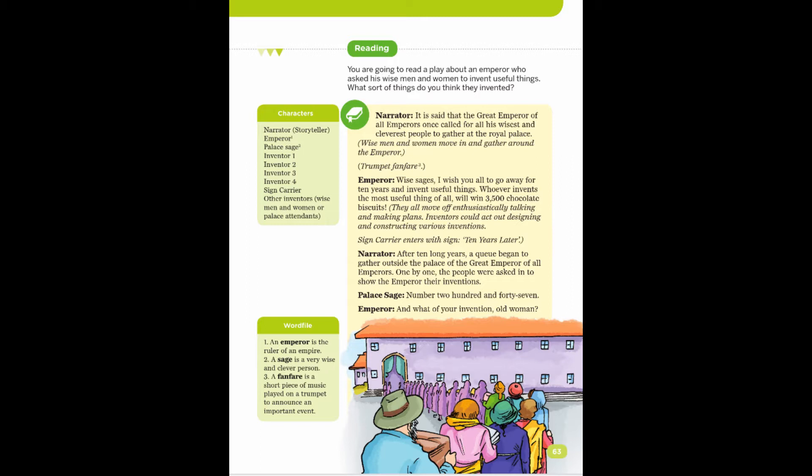Trumpet fanfare. Emperor: Wise sages, I wish you all to go away for ten years and invent useful things. Whoever invents the most useful thing of all will win 3,500 chocolate biscuits. They all move off enthusiastically, talking and making plans.